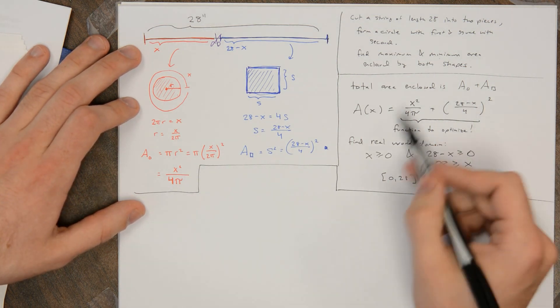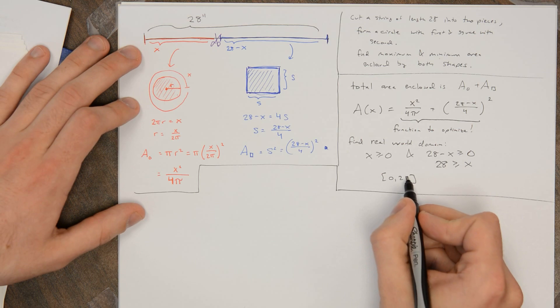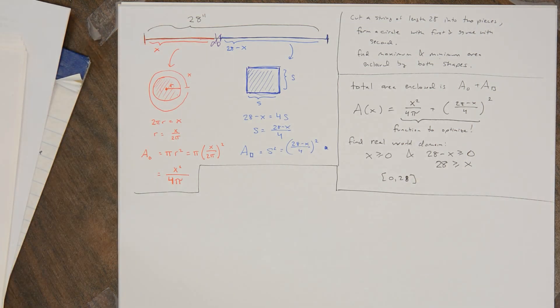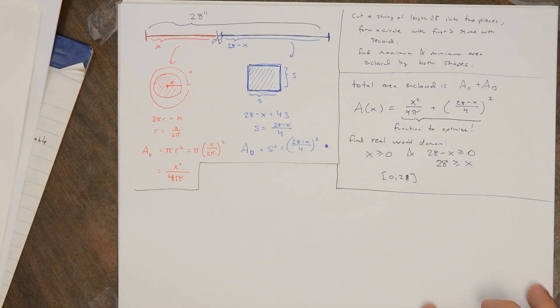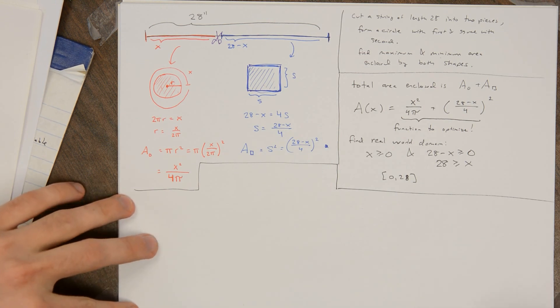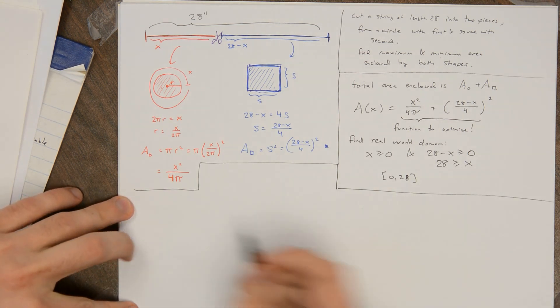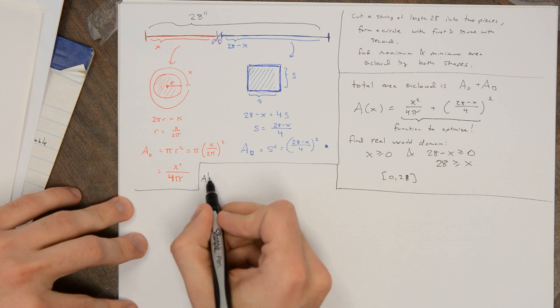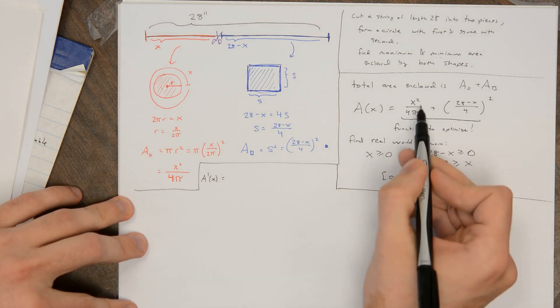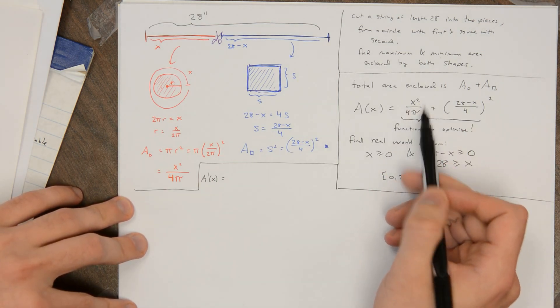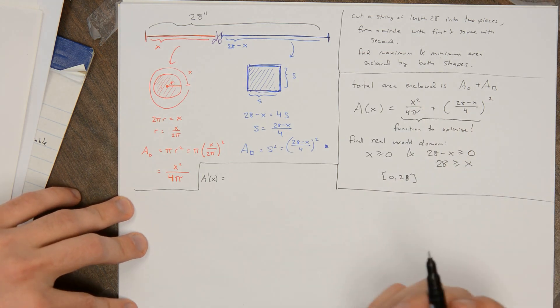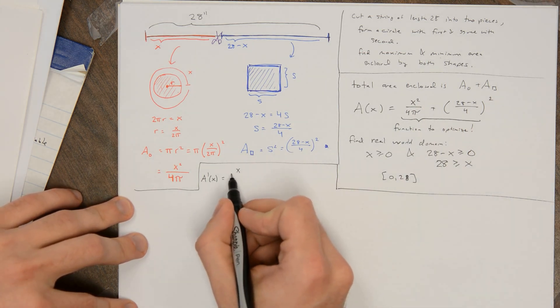And now we have a nice continuous function on a nice closed bounded interval. So we can go ahead and take the derivative, find where it's 0 or undefined, and evaluate it at the critical points and end points. So A'(x), I'll try to fit it in here. So this is 1/4π times the derivative of 2x. So that's the derivative of x², which is 2x. And then a 2 will cancel. It's like x/2π.